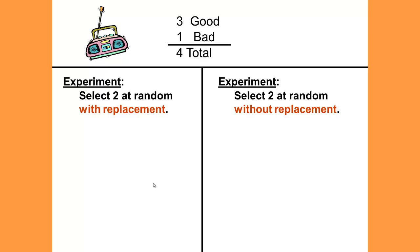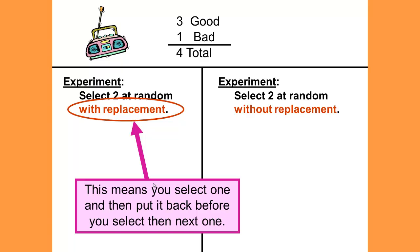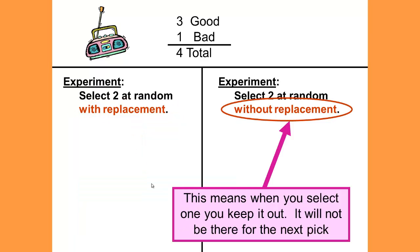What do the words 'with replacement' and 'without replacement' mean? With replacement means you select one and then put it back before making the next selection. Without replacement means when you select one, you keep it out — it will not be there for your next pick. You hold it in your hand, put it behind your back, or give it to your best friend — it is not part of the next selection.